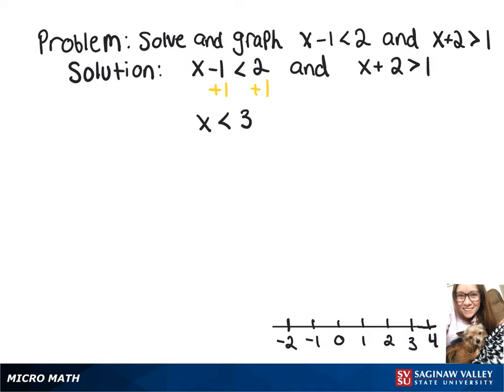And then on this other one, we're going to subtract 2 from each side. So then we've got x is less than 3, and x is greater than negative 1.